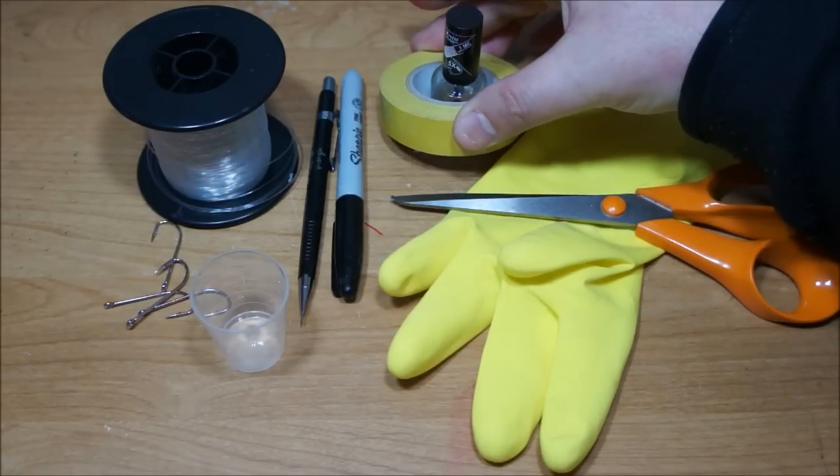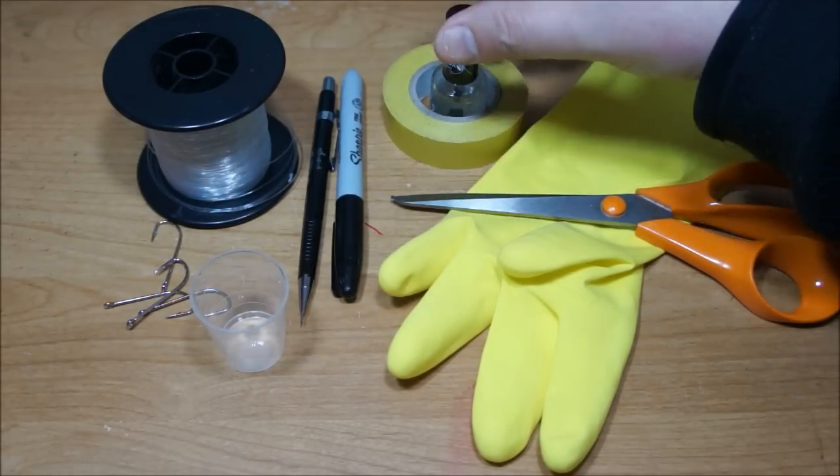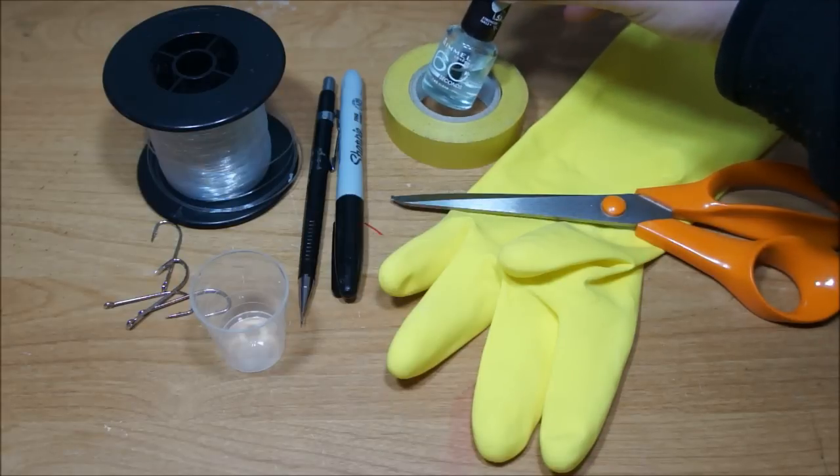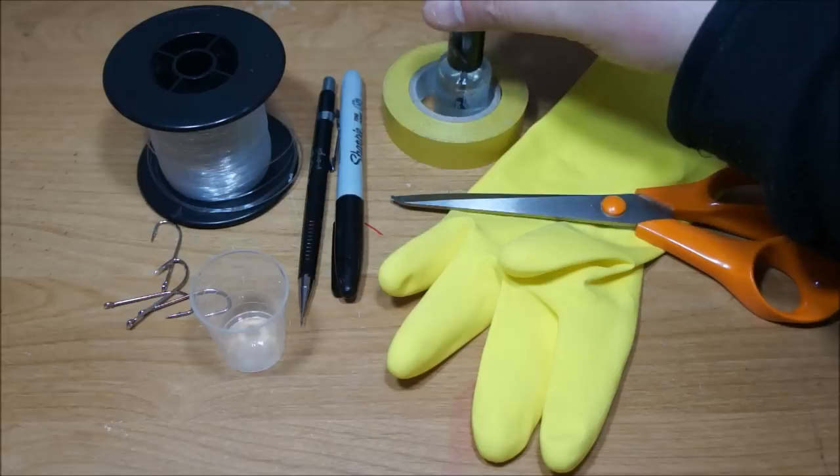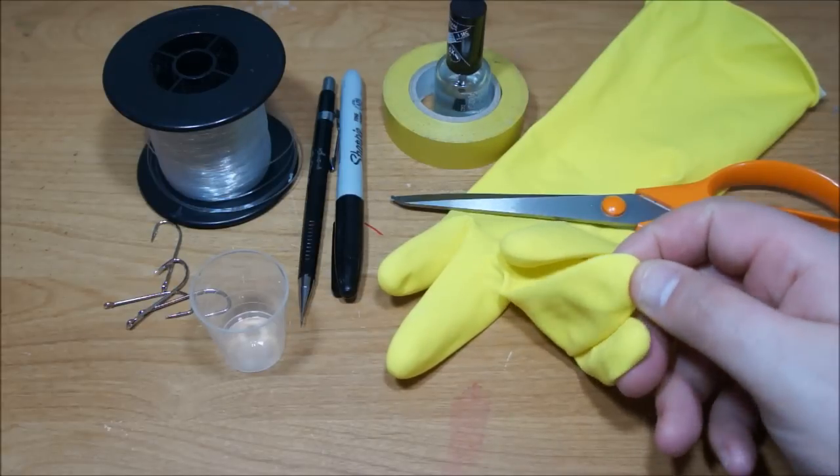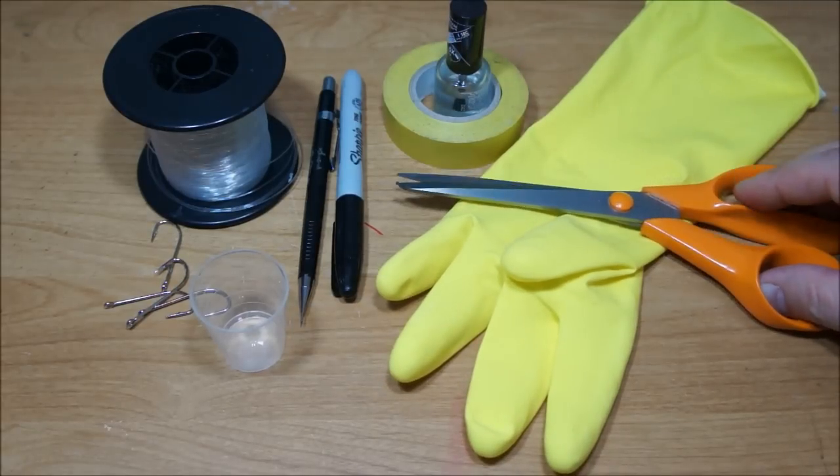Some insulation tape, this is 20mm, three quarters of an inch. Just clear nail varnish, fast drying or whatever you've got. A marigold or washing up glove and a pair of sharp scissors.